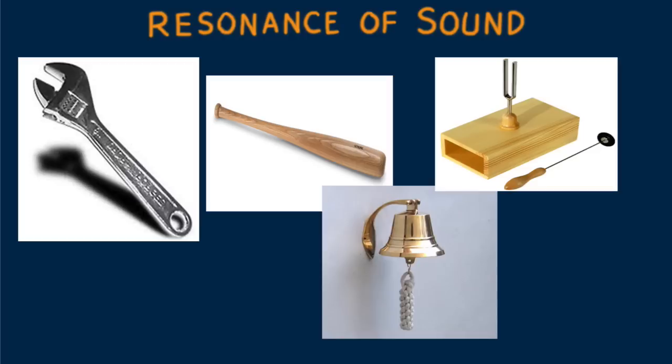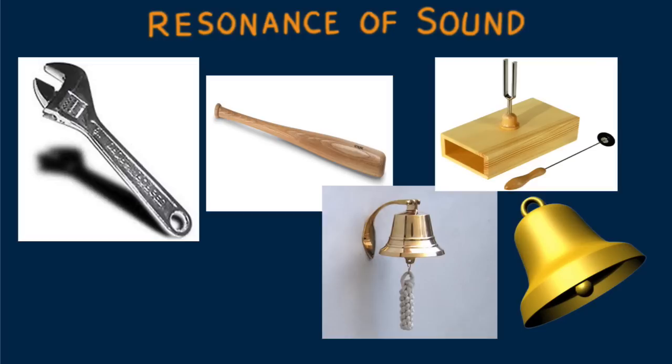Some objects like bells and tuning forks vibrate predominantly at one frequency called natural frequency. The natural frequency depends on such factors as the elasticity and shape of the object.